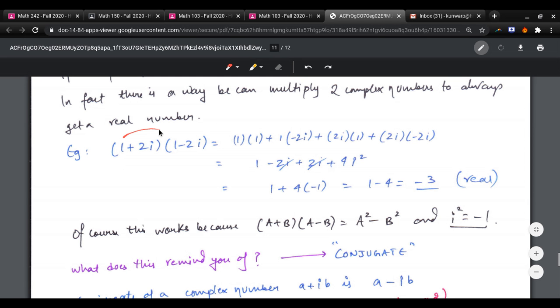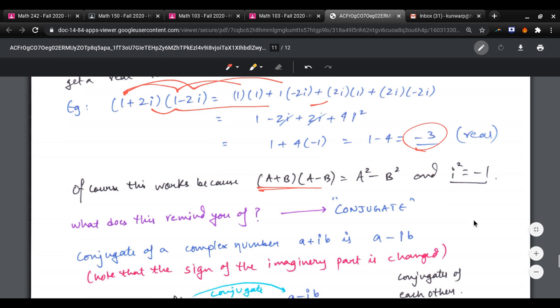Let's say 1 plus 2i times 1 minus 2i. Foil out, 1 times 1 gives me 1. 1 times negative 2i gives me that. 2i times 1 gives me this term and so on. In the end, I'm left with a real number. Of course, this works because of this identity: a plus b times a minus b is a squared minus b squared. And i squared is negative 1. What does this remind you of? Conjugate.